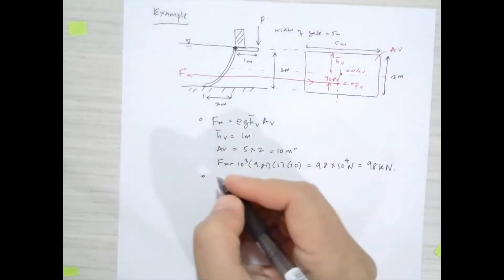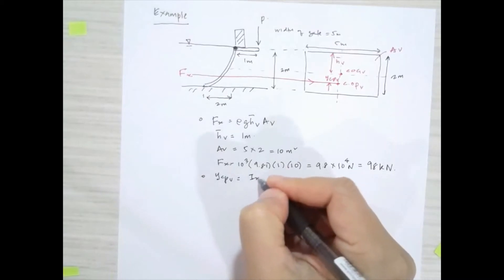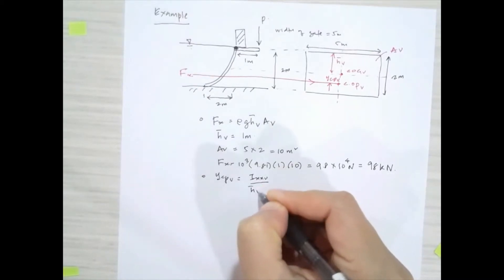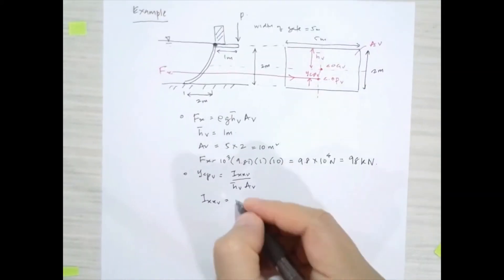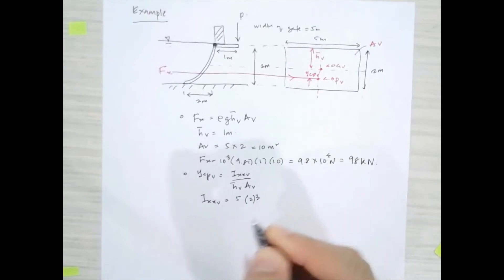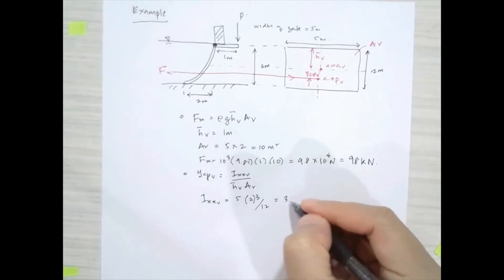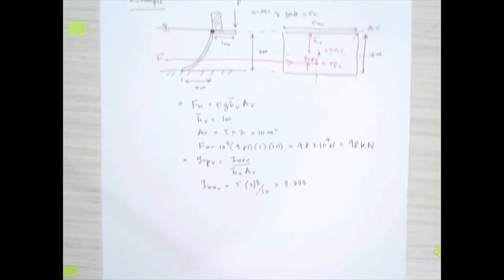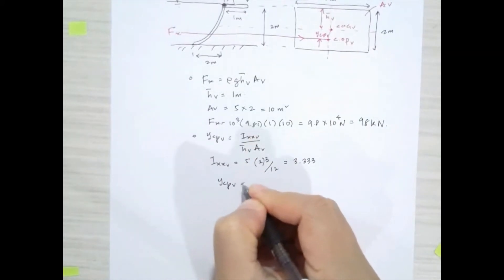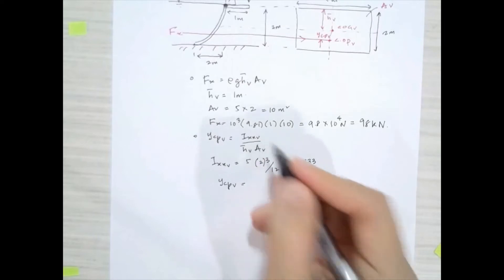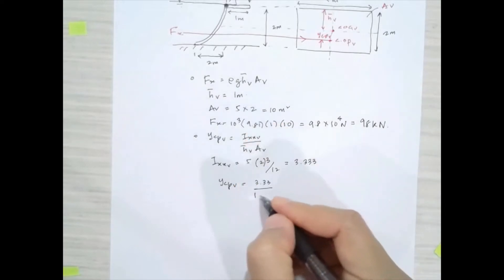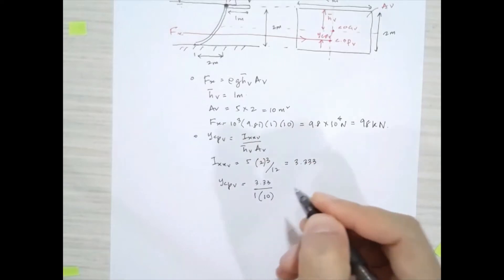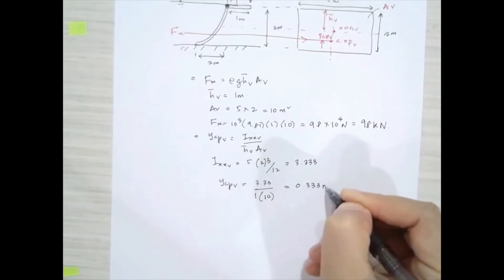Now we calculate YCP_vertical. YCP_vertical equals IXX_vertical divided by (H̄_vertical × A_vertical). IXX_vertical equals BD³/12, which is 5 × 2³ / 12 = 3.333 m⁴. So YCP_vertical = 3.333 divided by (1 × 10), which gives us 0.333 meters.